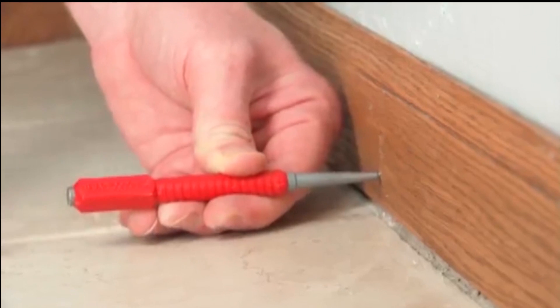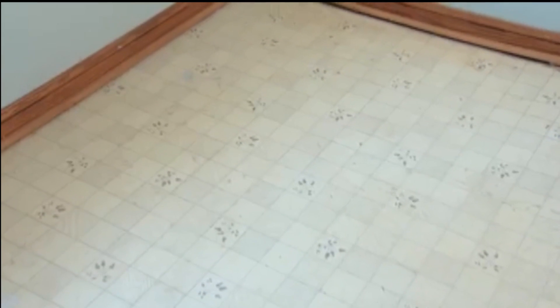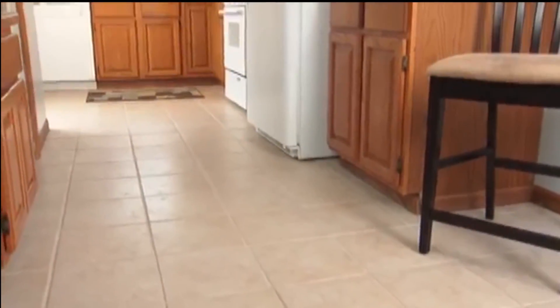The last step is to attach any trim work or transition strips. This kitchen had a plain floor without much character. But after adding floor tile, we've updated the look and given the homeowners a durable floor.